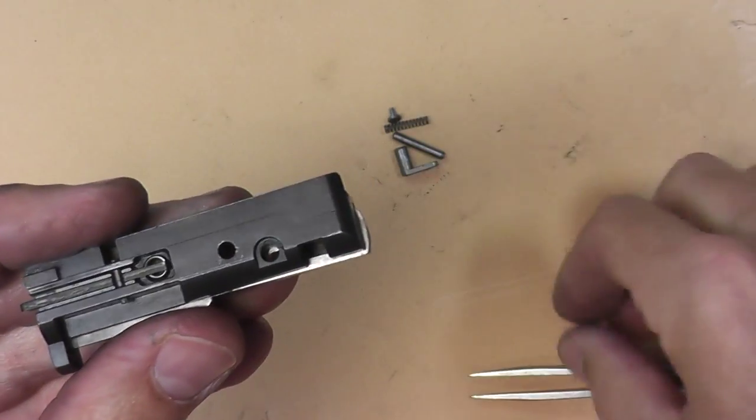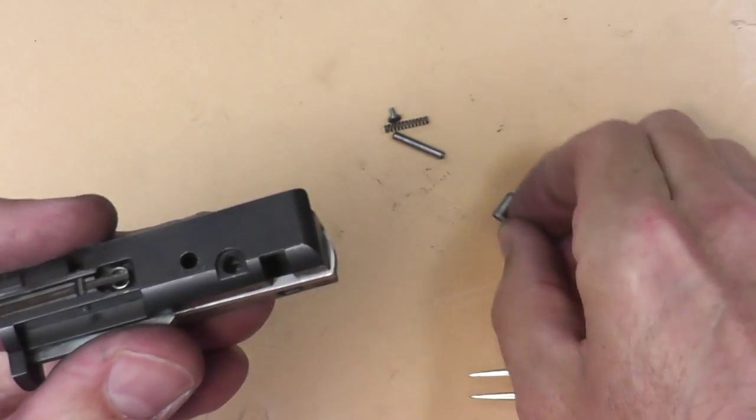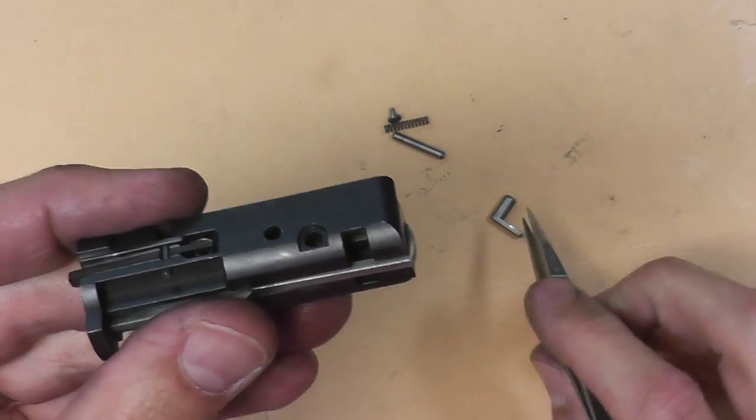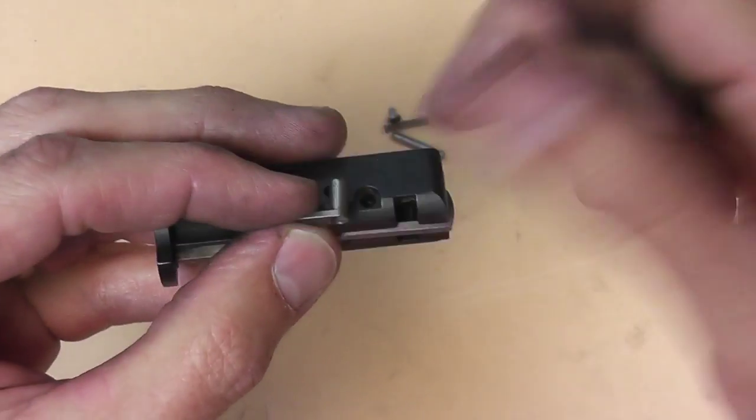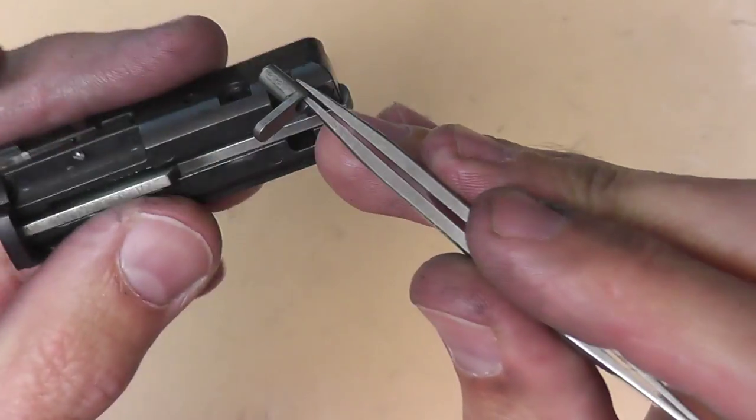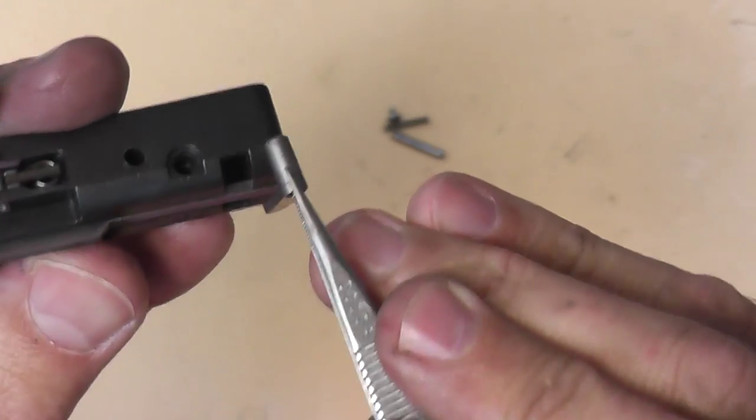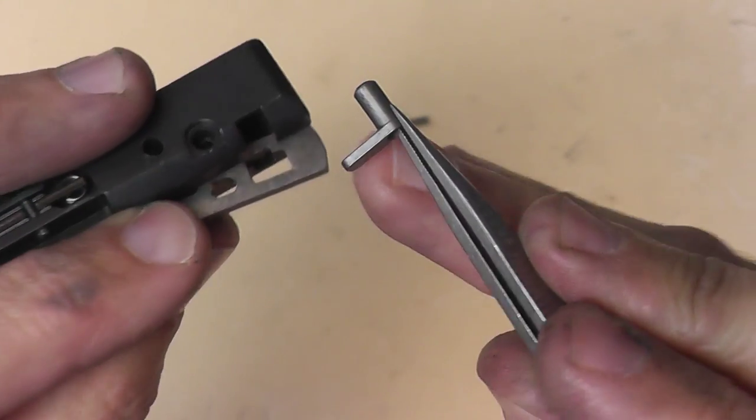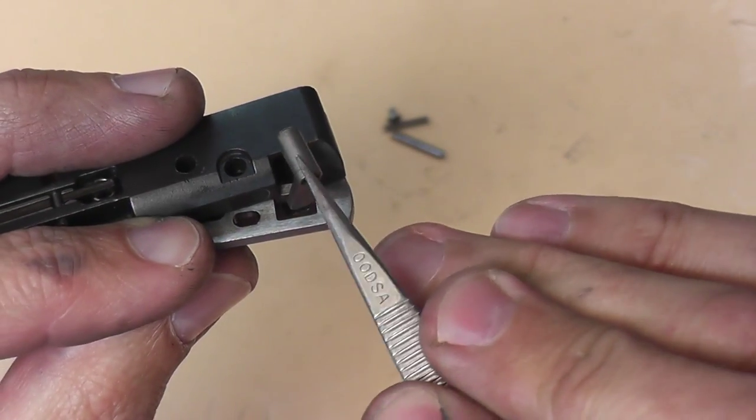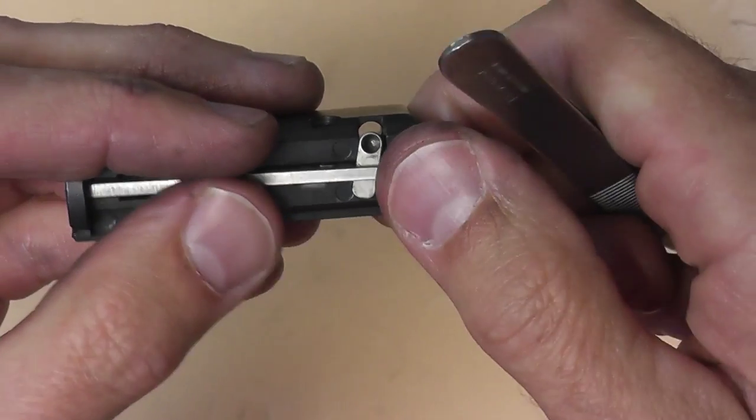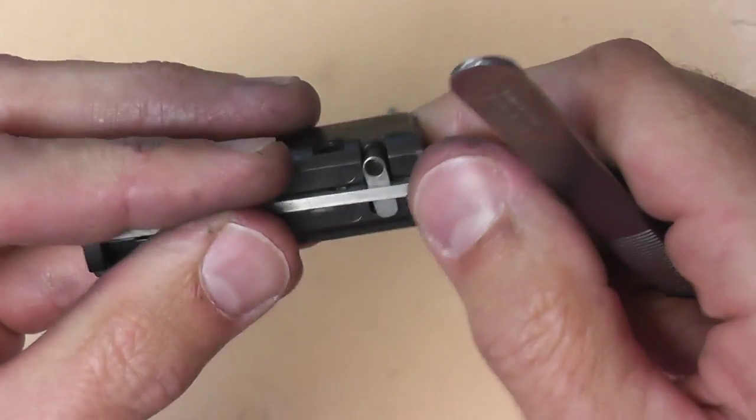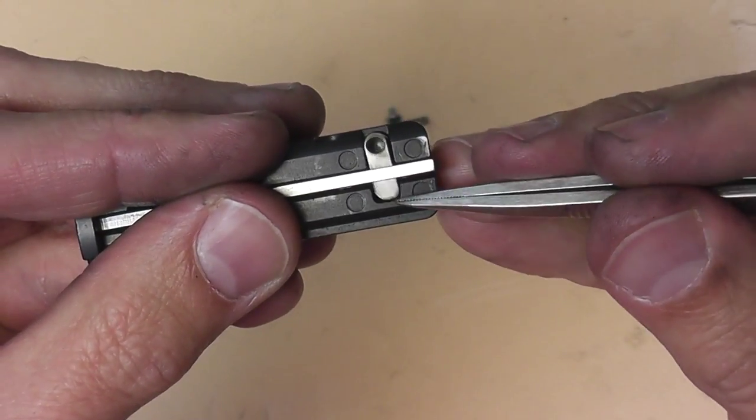So now if you want to put the series 80 components back in, I'm using tweezers. I highly recommend some tweezers if you don't have some in your tool bag. Get some. They're very helpful. So we're going to take this. We're going to raise up the firing pin a little bit in the back, stick that in like so, and just drop it in place. There we go.